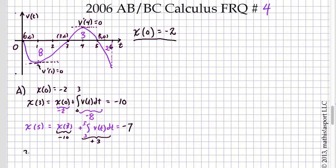Lastly, we'll find x of 6. That's going to be x at 5 plus the integral 5 to 6 of v of t dt. Again, we have the starting value from the previous. We know that this is negative 7. We know that this integral from 5 to 6, because we were given the area, is an additional negative 2. And so this puts us at negative 9.